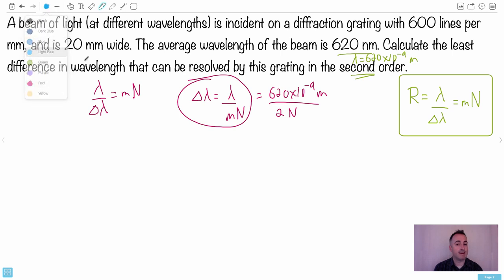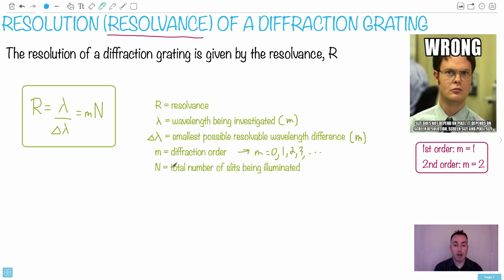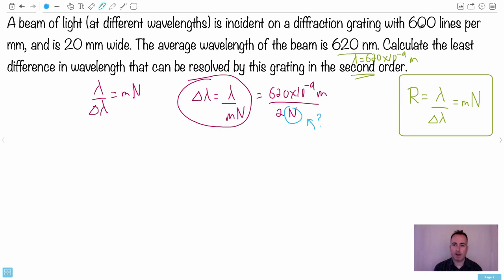I know my order is 2, so I have 2 times N. Here's the problem: what's N? I need this. I need to know, remember what this is? N is the number of slits being illuminated. So let's look carefully at what they gave us here. We have a diffraction grating. Let's see, now we have 600...